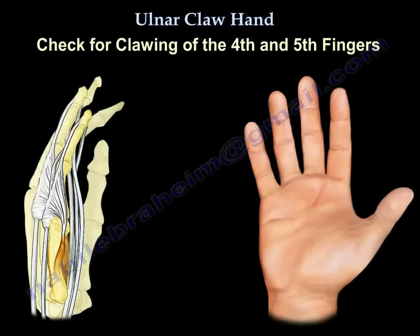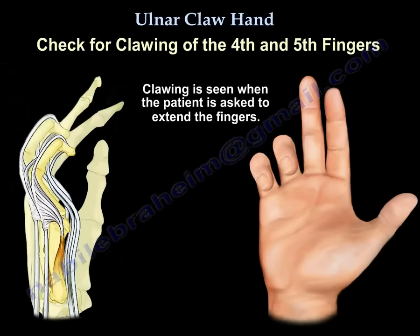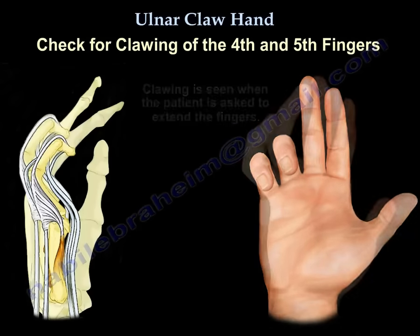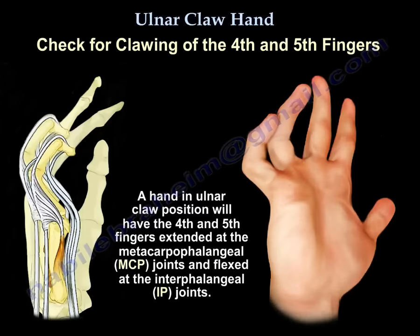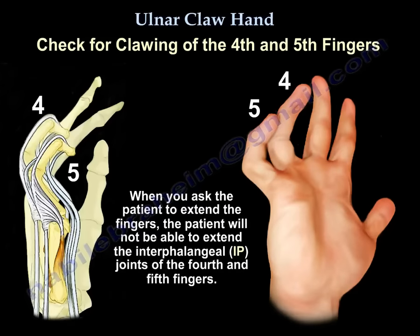How do you check for clawing? Clawing is seen when the patient is asked to extend the fingers. A hand in the ulnar claw position will have the fourth and fifth fingers extended at the MCP joint and flexed at the IP joints — the interphalangeal joints. When asked to extend the fingers, the patient will try but will not be able to extend the interphalangeal joints of fingers four and five.